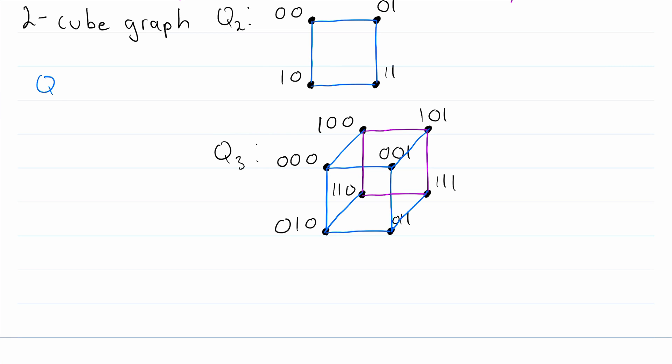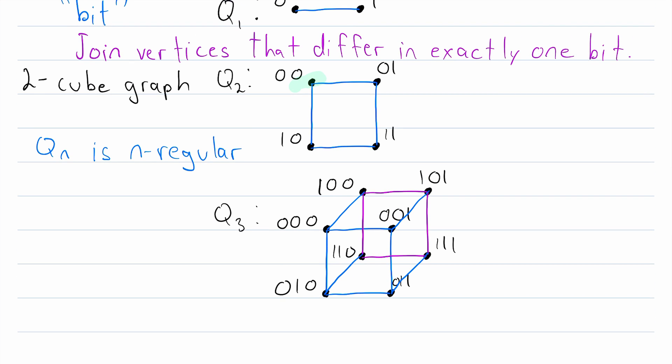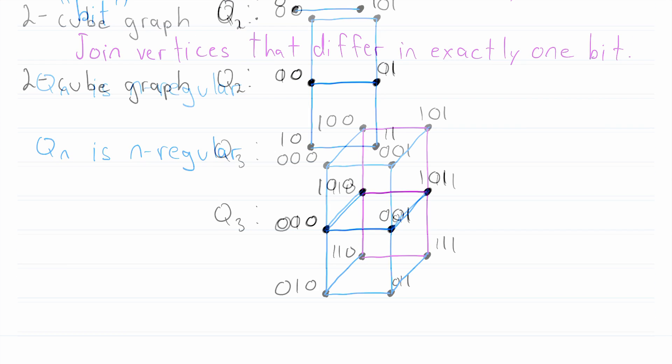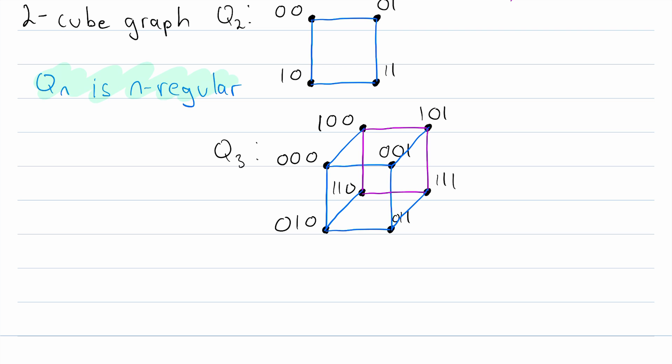Something interesting you might notice is that the hypercube graph Qn is n-regular. In Q3, for example, every vertex has degree 3. In Q2, every vertex has degree 2, and so on. So try to figure out why that is true if you're not already sure.